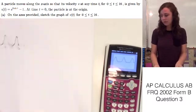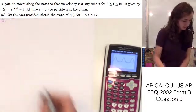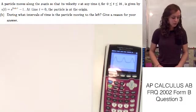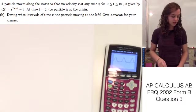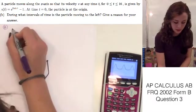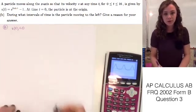So now we can move on to part b. And in part b, it says, during what intervals of time is the particle moving to the left? Give a reason for your answer. We know that when v(t) is less than 0, then the particle is moving to the left.